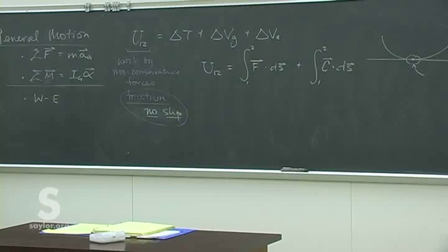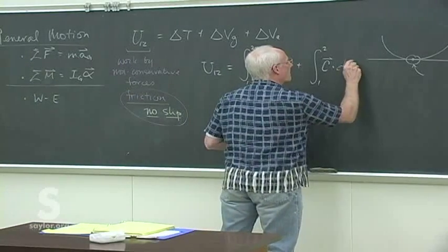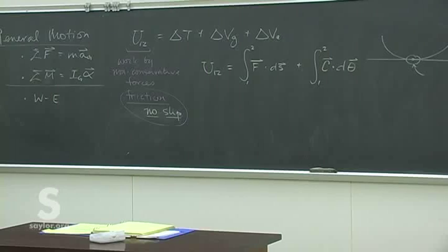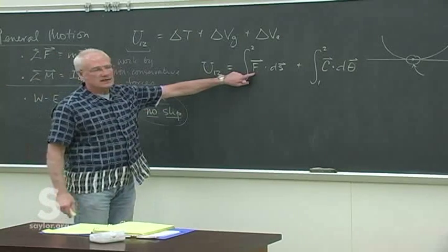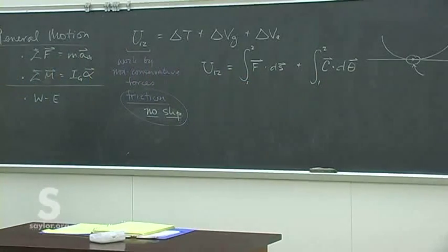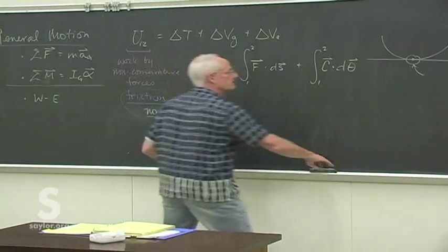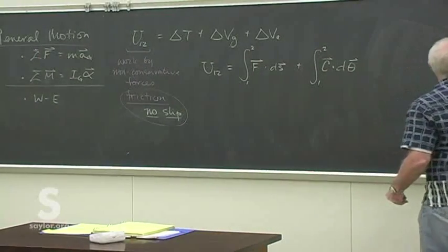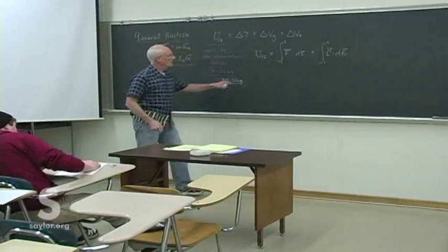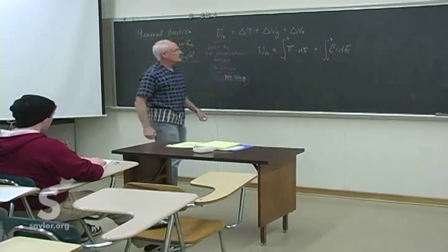If we have a couple — a motor, for instance — doing work, it depends upon the angular distance through which it works. So if we have slipping, skidding, a rope pulling, or an applied couple or torque, we can figure out the work done depending on the distance or angular distance through which that couple acts. That's one change we have to make now that we're adding both translational and rotational motion.